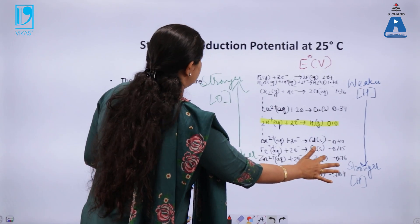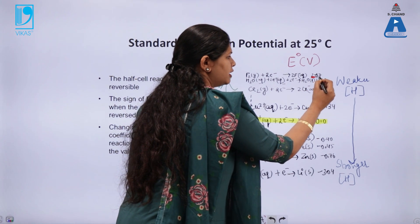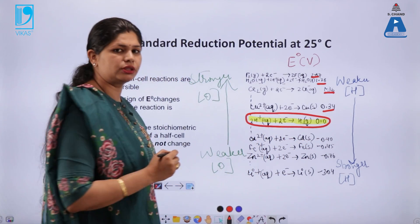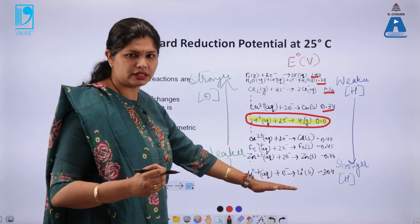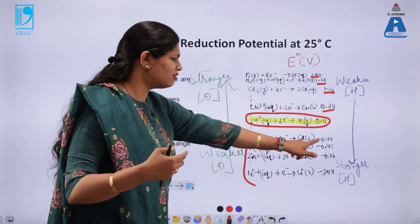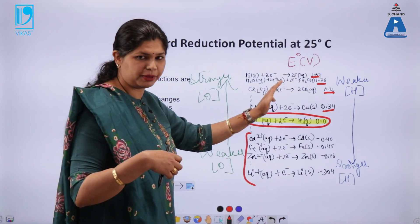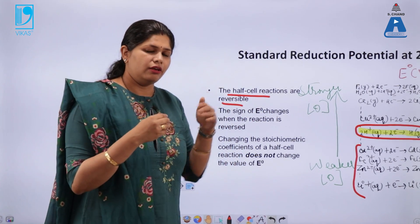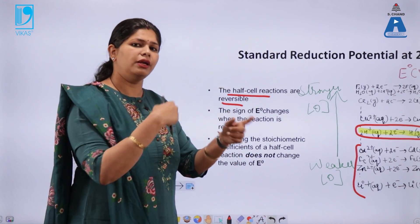This is an electrochemical series showing the various values of reduction potential. By default, the standard hydrogen electrode reduction potential is taken as 0 volt. All values above this are positive; below this are negative, meaning those species have less tendency to get reduced. A negative value means they have more tendency to get oxidized compared to hydrogen or other species above them. The half cell reactions are reversible, so we will not always observe reduction.